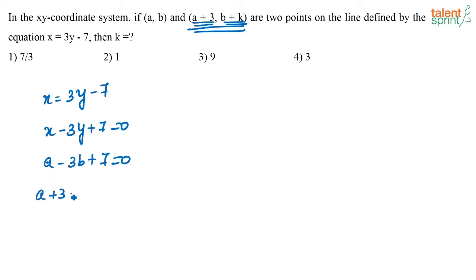That is nothing but a plus 3 minus 3 into b plus k plus 7 that is equal to 0. Or I can say a plus 3 minus 3b minus 3k plus 7 equals to 0, or a minus 3b plus 7 plus 3 minus 3k is equal to 0.